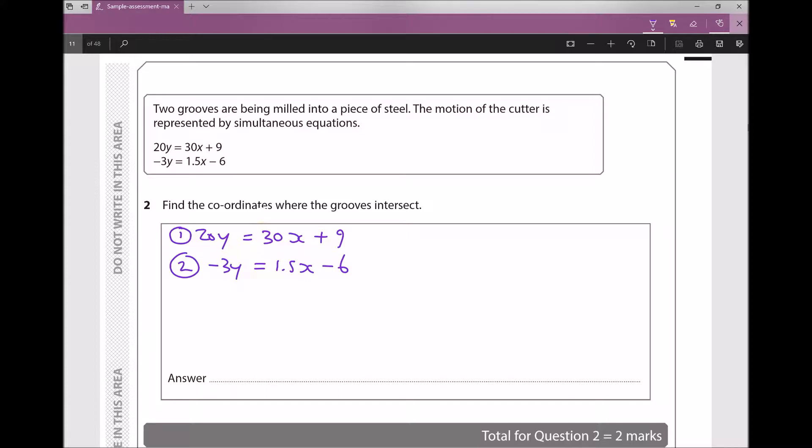Now we have two options for solving this. We can solve the simultaneous equations by substitution, or we can solve the simultaneous equations by elimination. If I were to solve these by elimination, then what I would be looking to do would be to make the coefficients of x or y the same as each other in these two equations, and that's the option that I'm going to go for here.